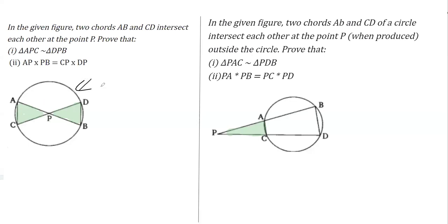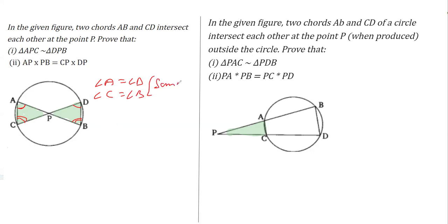Considering the first figure, we can write two angles as equal: angle A is equal to angle D, and angle C is equal to angle B. This is because angles in the same segment are equal — so angle A equals angle D, and angle C equals angle B, both by the same segment theorem.